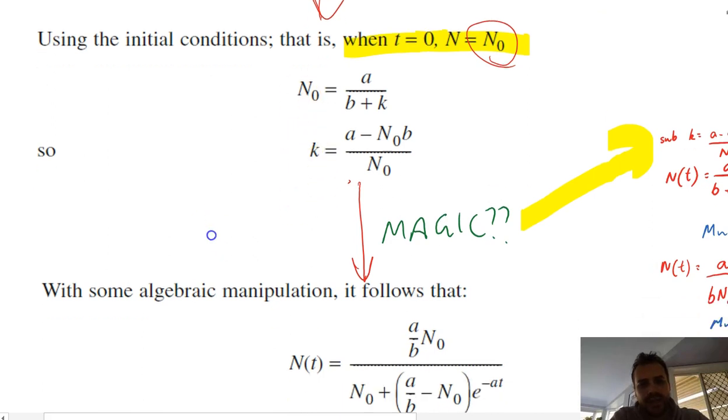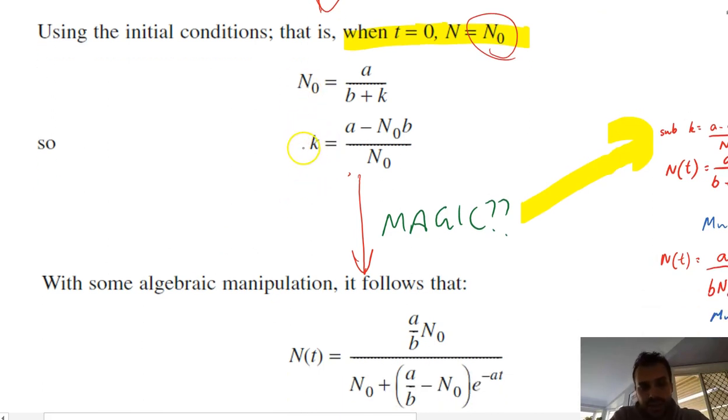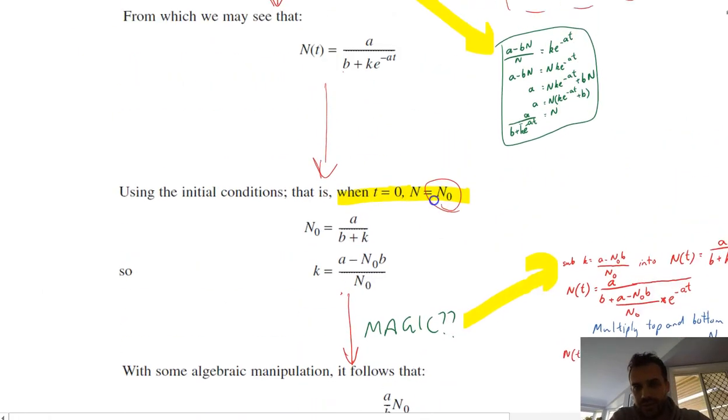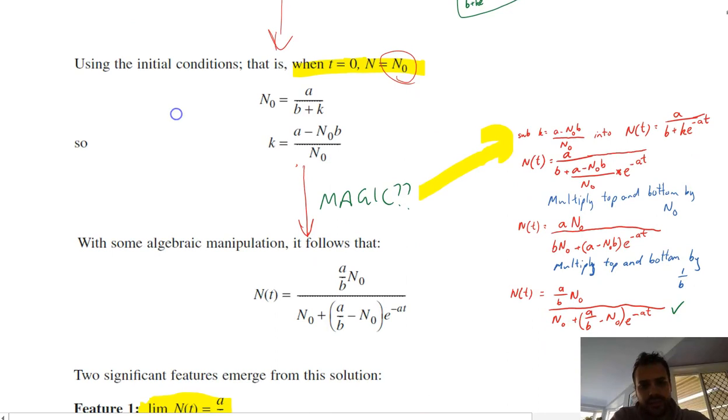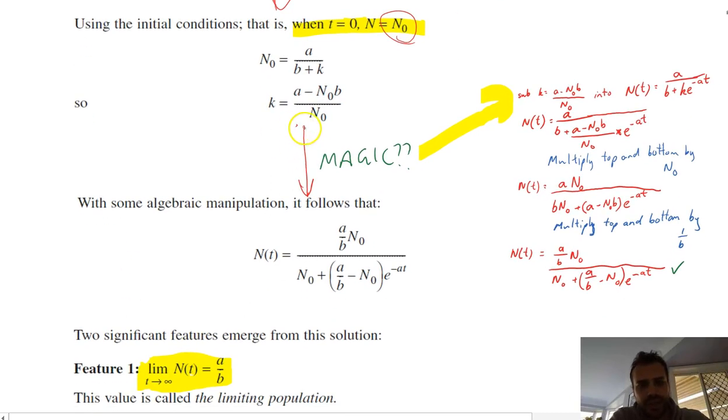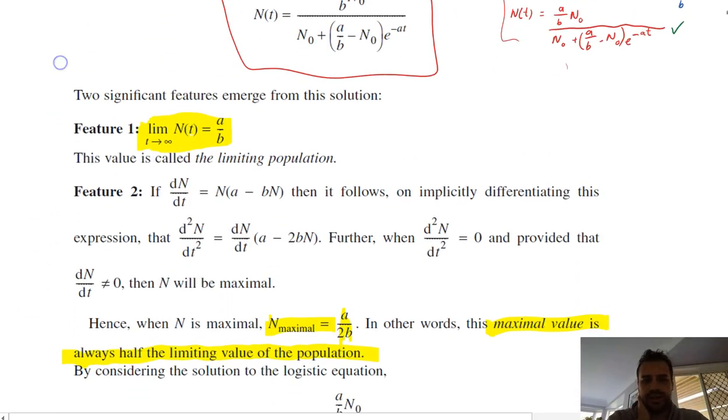And here's our initial population. So now we can say that k, that arbitrary constant that we generated a little while ago, that we generated up here, is equal to a minus the initial population times b over the initial population. So then they get from here to here. So they, they, what they essentially do is sub that into 4k into the function that we had at the top. And I've done the working for that here. Sub k into this, so subbing k into that function. And that'll yield this function here, or it'll yield that function there.